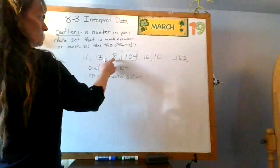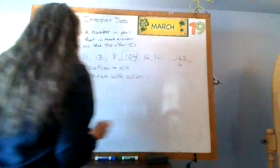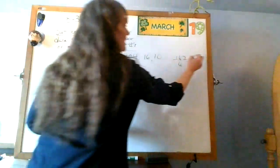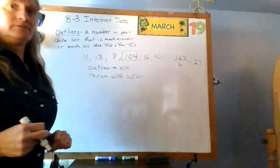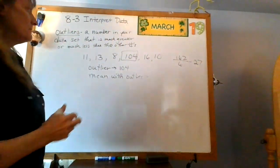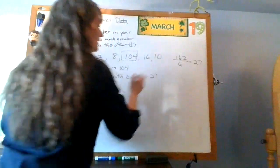And there's 1, 2, 3, 4, 5, 6 of them. So if I divide 162 by 6, I get 27, okay? The mean without the outlier is 27.